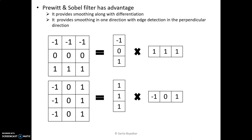If you observe all the masks — Sobel, Prewitt, and Robert — the summation of coefficients is 0, meaning all are high-pass filtering masks. Since an edge in the image is a high-frequency component, we use high-pass filtering masks to detect edges. However, noise in the image is also a high-frequency component, so when detecting edges with these masks, noise also gets enhanced. That is why, if we blur and smooth the noise before detecting edges, it gives better results. This is why Prewitt and Sobel have the advantage of smoothing noise while detecting edges in the perpendicular direction.